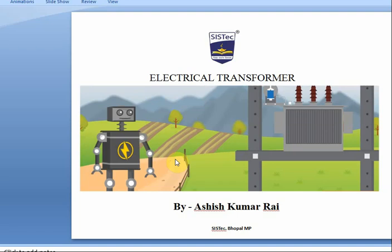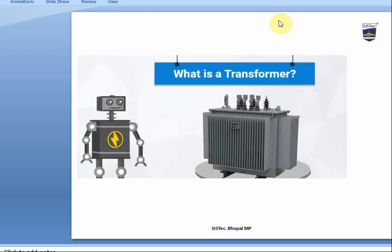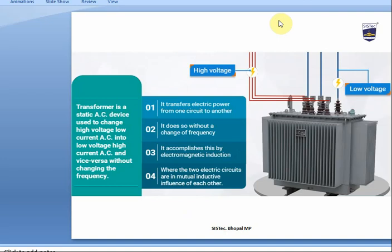A transformer is a static AC device which is used to change high voltage low current into low voltage high current AC, and vice versa, without changing the frequency. Basically, a transformer transfers electrical power from one circuit to another without change of frequency. It accomplishes this by electromagnetic induction, where the two electric circuits are in mutual inductive influence of each other.